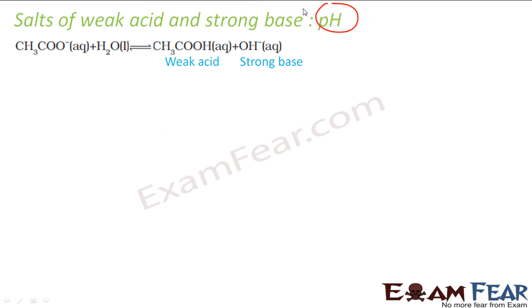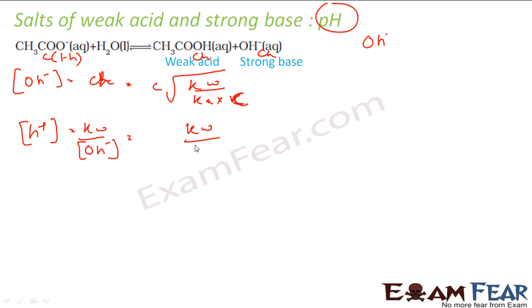Let us try to find the pH of the solution. For pH I have to find H⁺ concentration first, but I have OH⁻. OH⁻ is nothing but CH. This was C minus H, this was CH at equilibrium. OH⁻ concentration is nothing but CH. H was nothing but square root of Kw by Ka into C. H⁺ concentration is Kw by OH⁻ concentration. Let us put the value: Kw by C root Kw root of Ka into C. You solve this, you get root of Kw Ka by C.